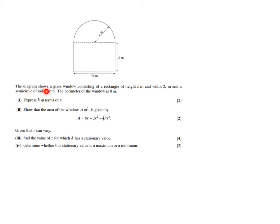The diagram shows a glass window consisting of a rectangle of height h meters and width 2r meters, and a semicircle of radius r. It's a glass window that looks like a church window — a rectangle of height h and width 2r, topped with a semicircle of radius r.